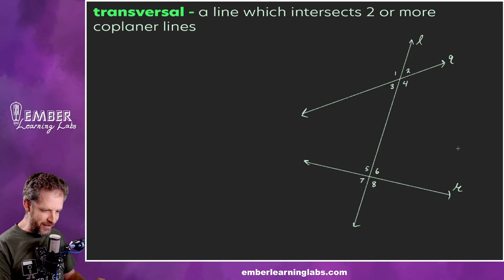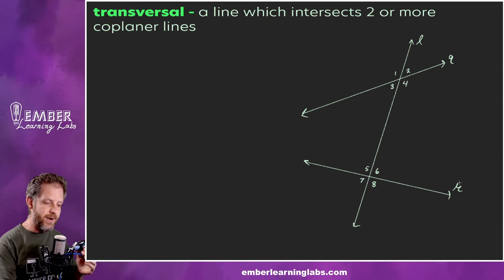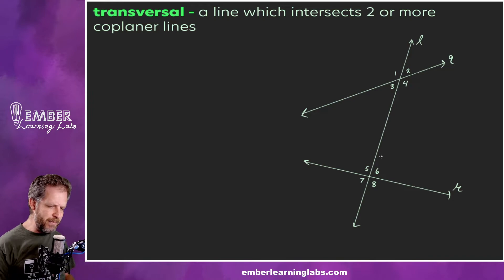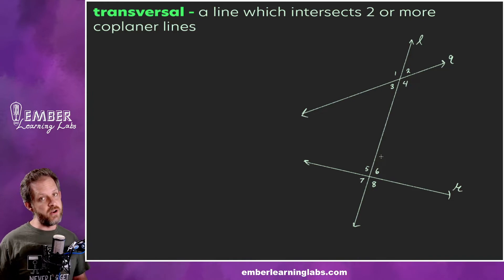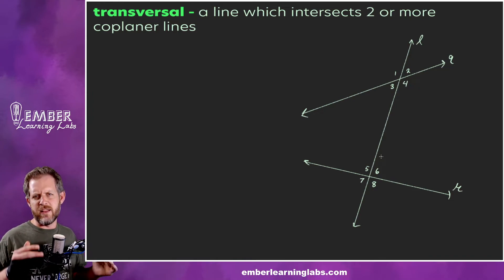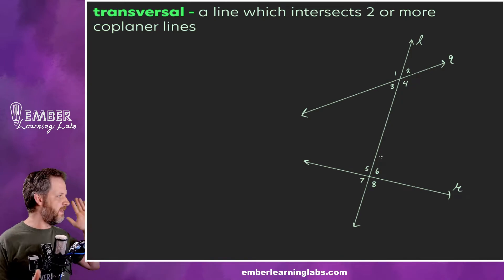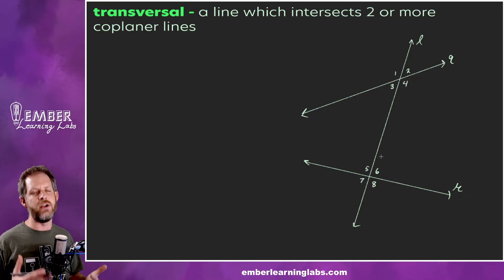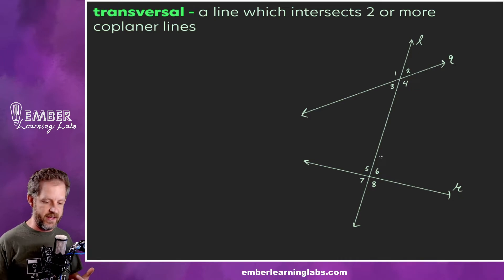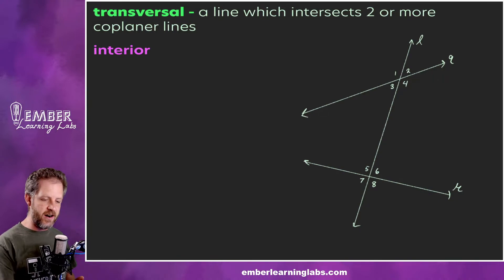There's a bunch of vocabulary that lives around this diagram — that's why I've labeled all these angles. We need to be able to talk about which angles we're discussing because there are some special relationships, which we'll learn in later lessons. In this particular lesson we're just laying out the vocabulary; later we'll see how they're related.